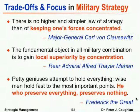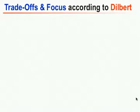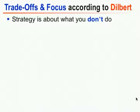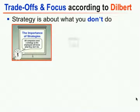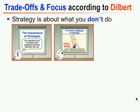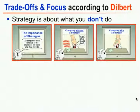Even Dilbert understands the heart of strategy. The consultant Dogbert gives a presentation saying: 'All companies need a strategy so the employees will know what they don't do.' A company without a strategy: the phone rings and the employee doesn't know what to do. A company with a strategy: the phone rings, they answer it, and they say 'we don't do that.' An oversimplification, but it illustrates that strategy is about what you don't do.